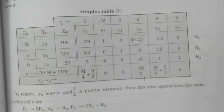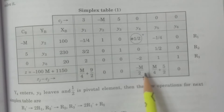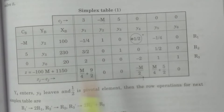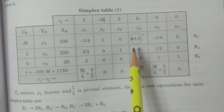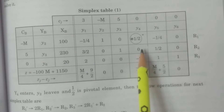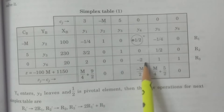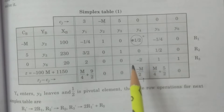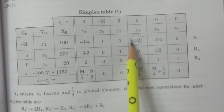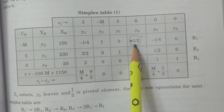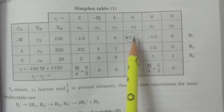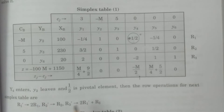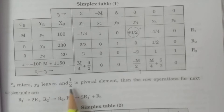Therefore, y4 enters the basis. To identify which vector leaves, we calculate the minimum ratio xBi/yir for yir > 0: 100 ÷ (1/2) = 200, and 20 ÷ (−2) cannot be considered since yir is not positive. So the minimum is 200, the pivotal element is 1/2 corresponding to y2. Therefore y2 leaves the basis, y4 enters, and 1/2 is the pivotal element.